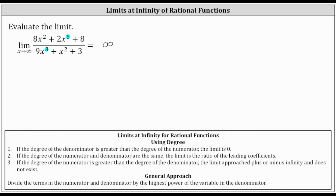The second method to determine this limit is the more general approach: divide the terms in the numerator and denominator by the highest power of the variable in the denominator. Looking at the denominator, the highest power on the variable is three, and therefore we divide each term by x cubed.